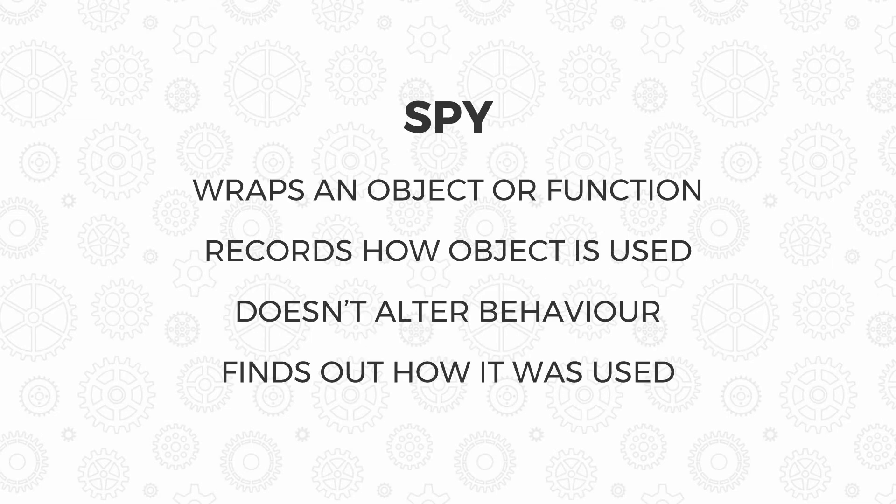Next up, we've got a spy. A spy wraps an object or a function, but it also records how the object is used. So you can tell how many times something is called — for instance, if you're going to send emails, you can see how many times an API is called to send them. The thing is, it often doesn't alter the behavior; you're just finding out how the object or function was used.